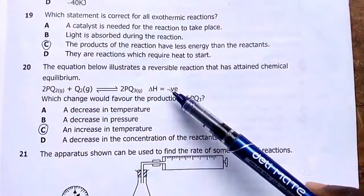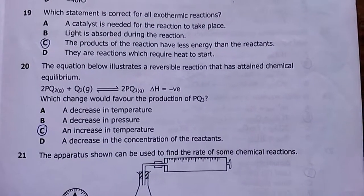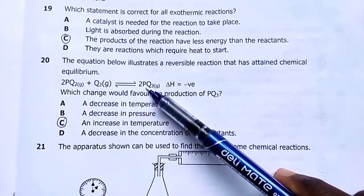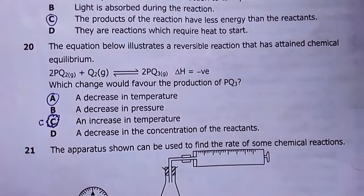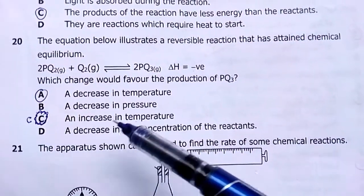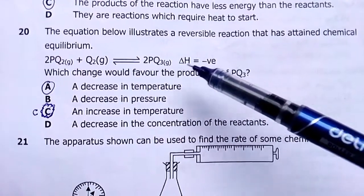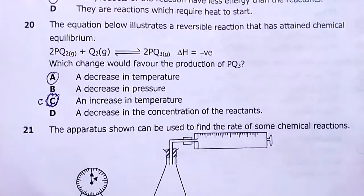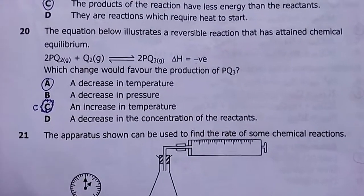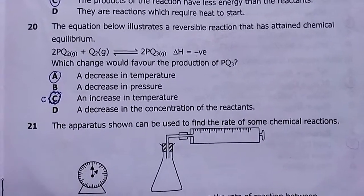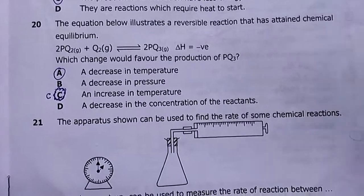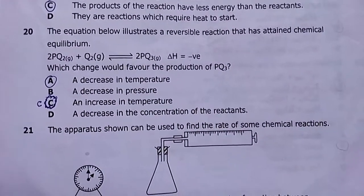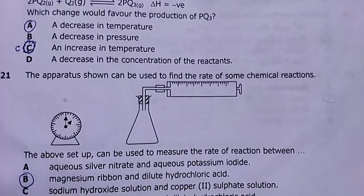Number twenty: the equilibrium equation illustrates a reversible reaction; enthalpy is negative. Which change would favor the product PQ₃? Negative enthalpy means the forward reaction is exothermic. Increasing temperature would slow it down — you'd suffocate it. But reducing temperature increases the temperature gradient between the reaction system and environment, so it loses heat more readily, promoting the forward reaction. My answer is A — decrease temperature.